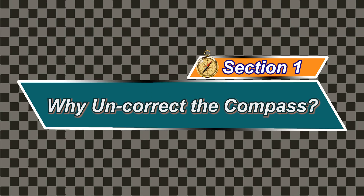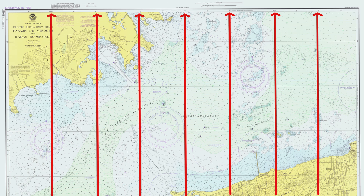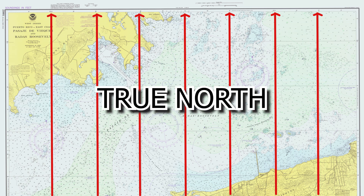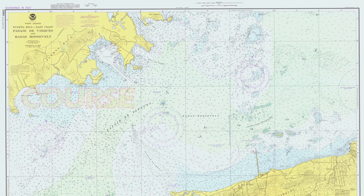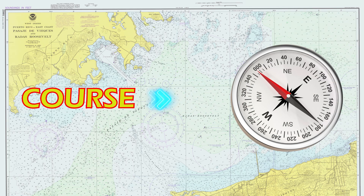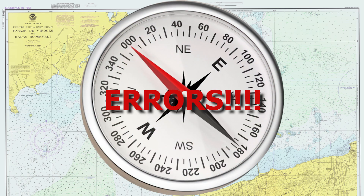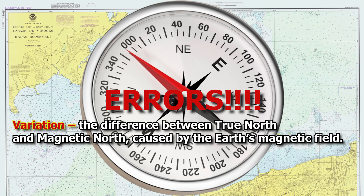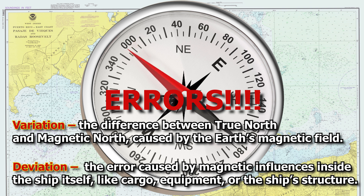Section 1: Why Uncorrect the Compass? When planning or monitoring a voyage, our courses and bearings on the nautical chart are always referenced to True North. But when it comes to actually steering the ship, the helmsman relies on the magnetic compass. To safely transfer a course from the chart to the compass, we must uncorrect — that means converting True to Magnetic to Compass. There are two main errors we need to account for: Variation, the difference between True North and Magnetic North caused by the Earth's magnetic field; and Deviation, the error created by magnetic influences inside the ship itself, such as cargo, equipment, or even the vessel's structure.